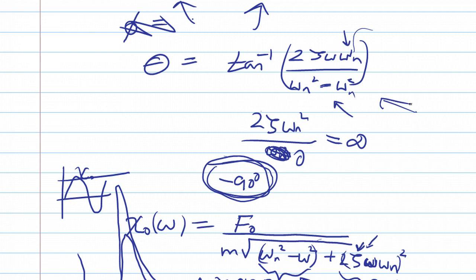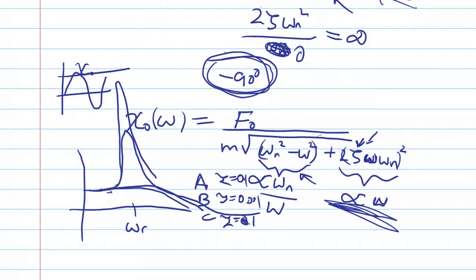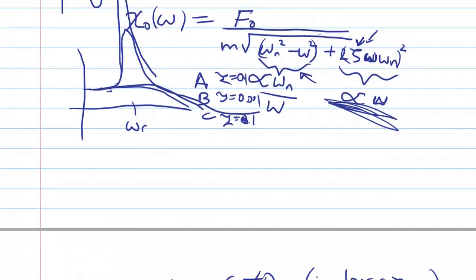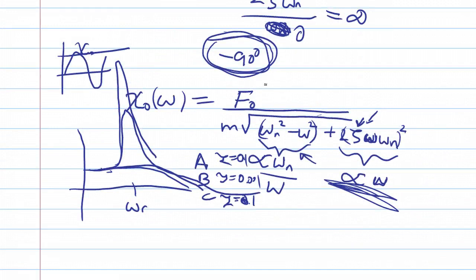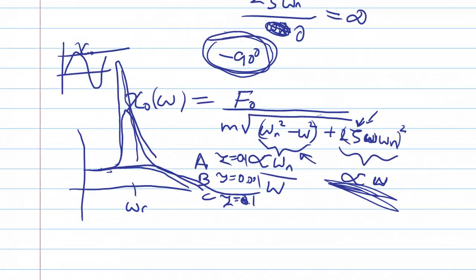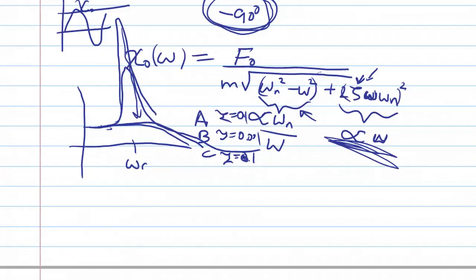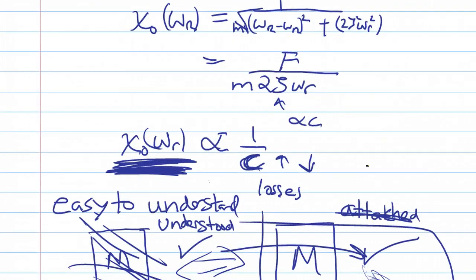I mentioned about the phase, how it's negative 90 at resonance, and we also mentioned that increasing the damping decreases the maximum resonance vibration. And we saw that it's inversely proportional to the C damping coefficient.